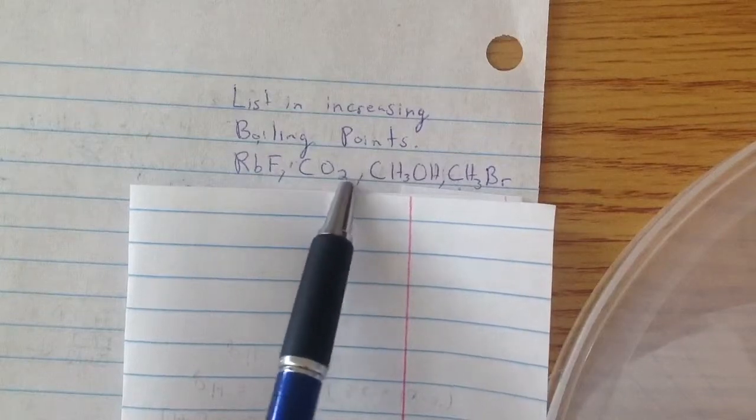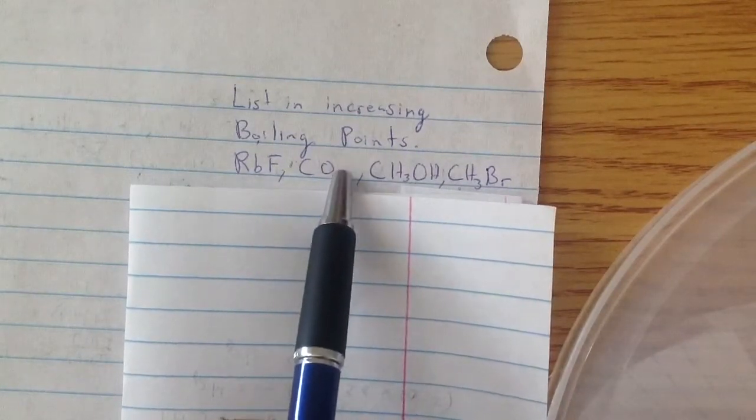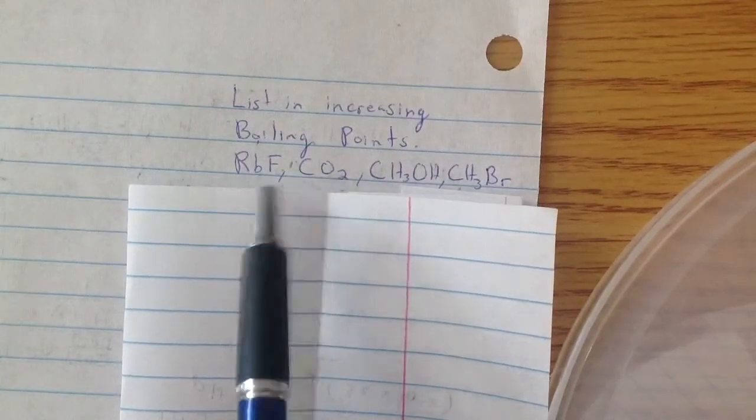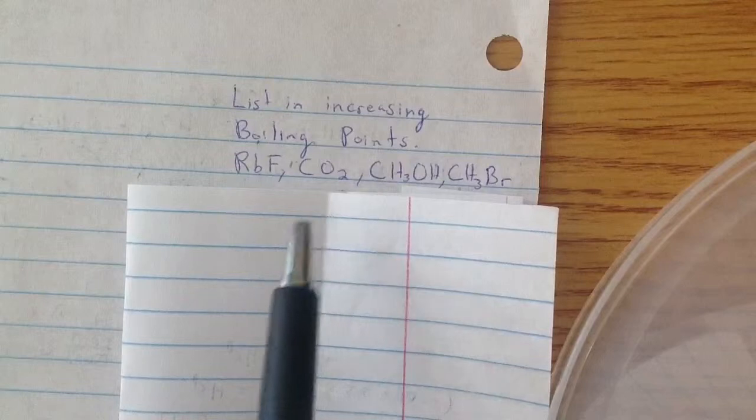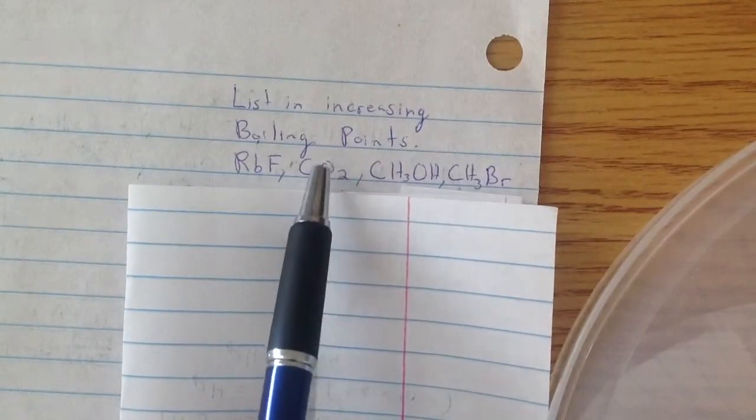Next, for CO2, if you look at the Lewis structure, you'll see that it's non-polar. And if it's non-polar, it can only have dispersion forces. It can't have dipole-dipole because dipole-dipole requires a polar.